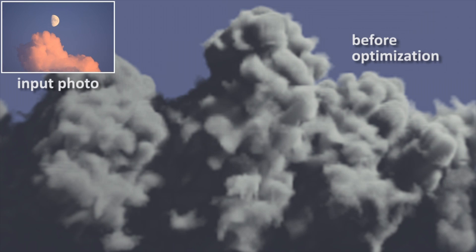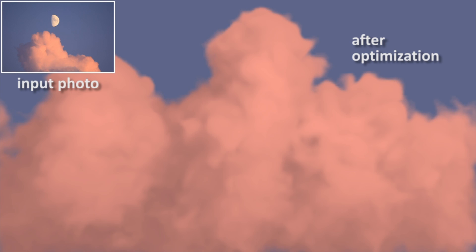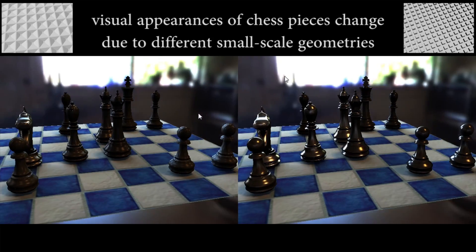There are several papers dealing with material properties. This system takes as input a photograph of a cloud and a simple cloud density function, and estimates the complex scattering properties and illumination to generate renderings similar to the photo.